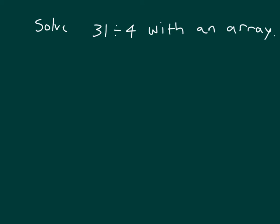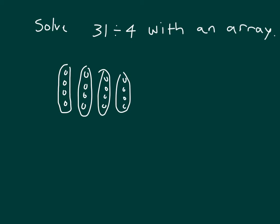Here we're asked to solve 31 divided by 4 with an array. Well, we're going to start very much the same way. Within each of these here, we will draw 4 circles. And then we're going by 4 because we were dividing by 4. So that's 4, 8, 12, 16, 20, 24. We can't make another group of 4, so we have 3.